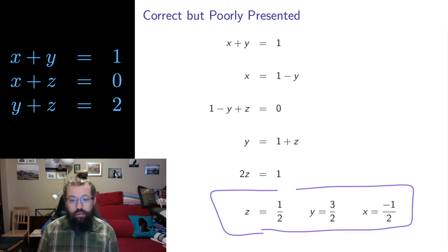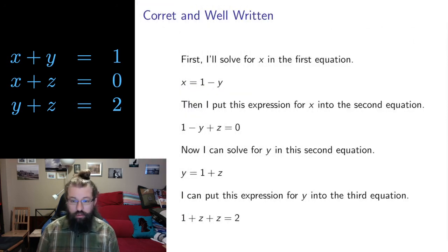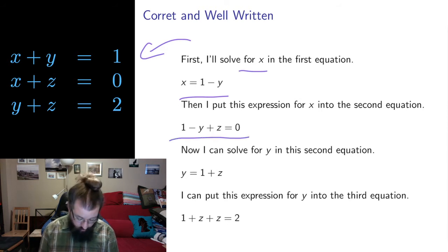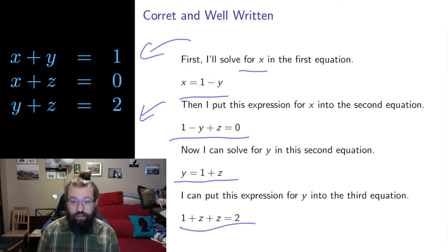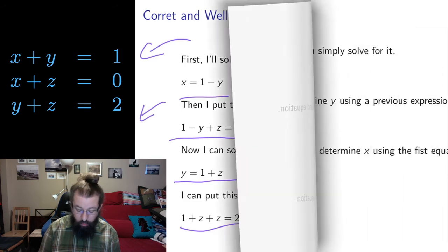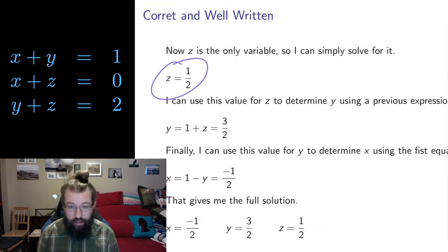What do I mean by annotate? Well, let's look at the same solution, but with annotations. So I'm now going to walk through more or less exactly the same steps that were on the previous slide. But now I'm going to tell you what I'm doing. So I'm going to first solve for x in the first equation. It's the first equation over here. If I solve for x, I get 1 minus y. Then I'm going to put that in the second equation. So replace x in the second equation. I get this expression. Now I can solve for y in that expression. And I can put this y into the third equation and get this expression. This expression now only involves z's. So I can solve for z. I get z equals 1 half.